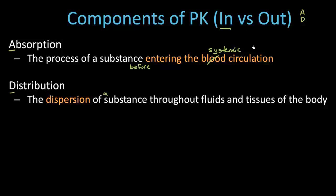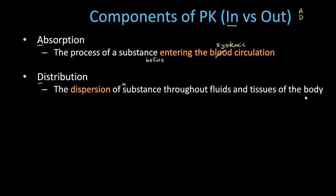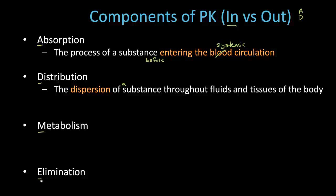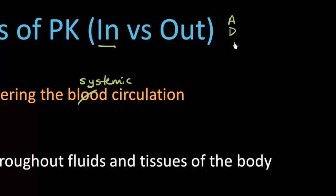So those are the two ins. What are the two outs? How do drugs leave our body? One of them is metabolism and the other is elimination — E. ADME — this is a little acronym commonly used to define the four components of pharmacokinetics: absorption, distribution, metabolism, elimination.